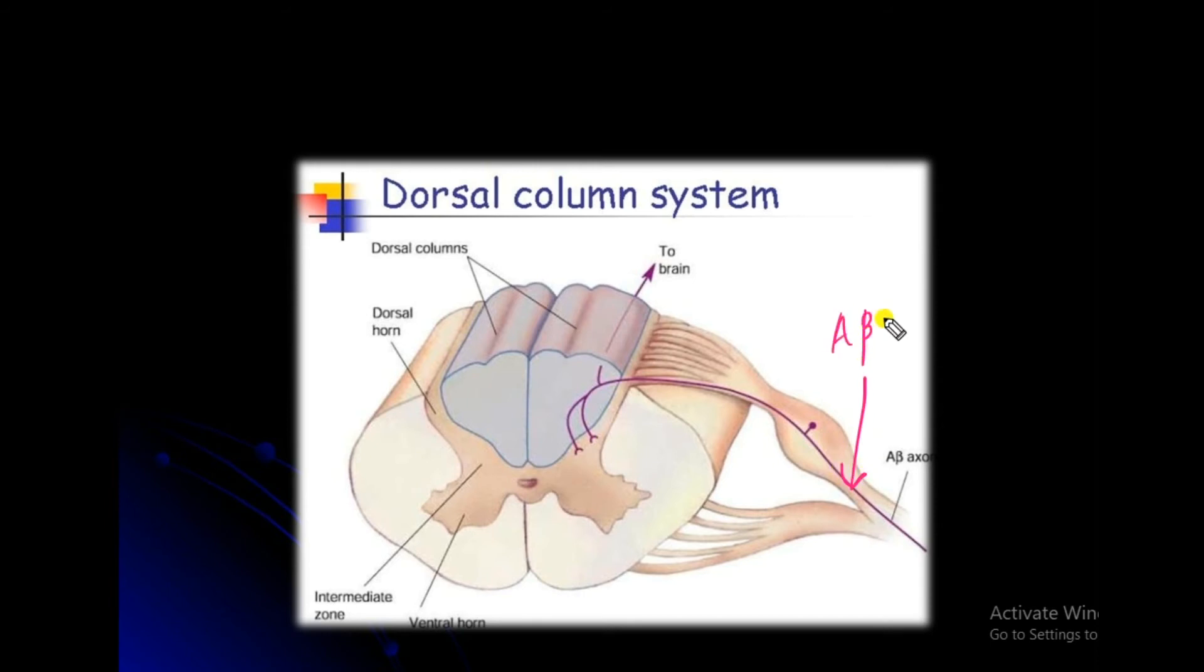Alpha beta axons come to dorsal root ganglia, then come to the dorsal column and ascend to the brain. You can see the dorsal horn, intermediate zone, and the ventral zone of the spinal cord section.